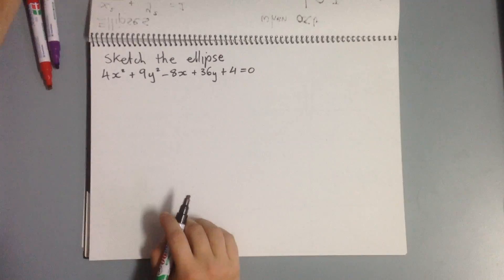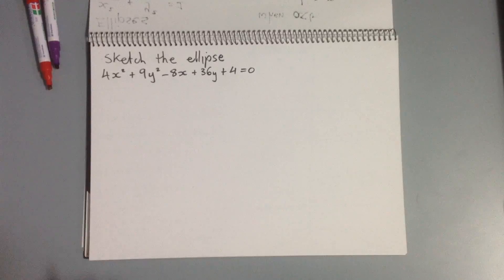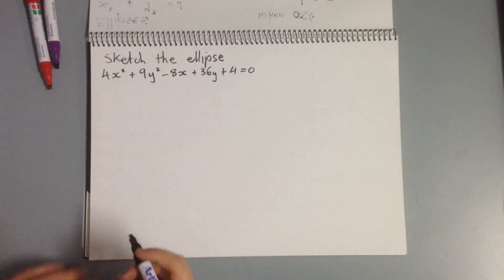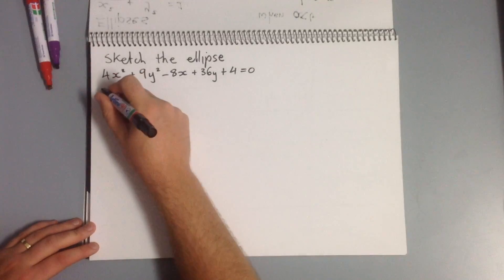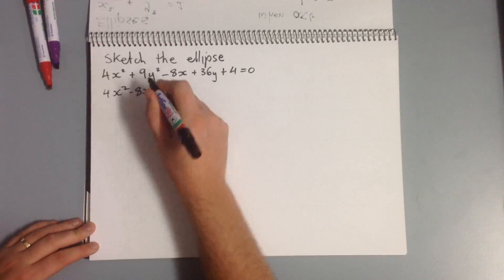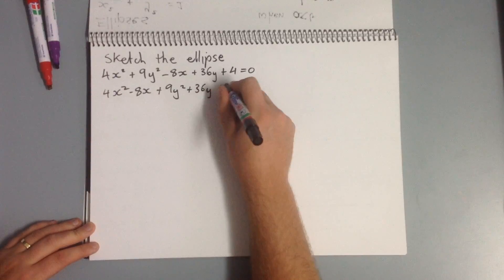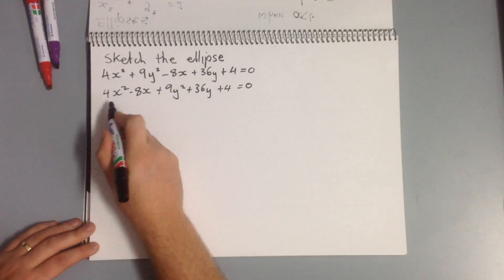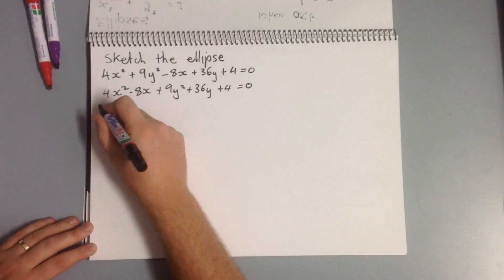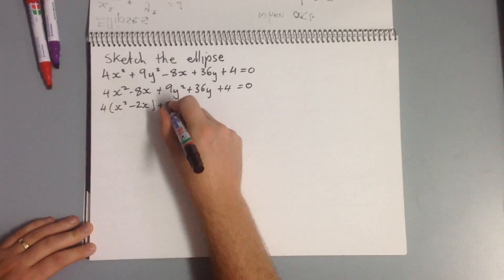So we'll have a look at sketching one of our ellipses. We've got: 4x squared plus 9y squared minus 8x plus 36y plus 4 equals 0, and we need to sketch that. We've got to use completing the square in order to identify the form of the ellipse. So we need to get our terms together: 4x squared minus 8x plus 9y squared plus 36y plus 4 equals 0. We want to take out 4 as a common factor from our x terms, and take 9 out as a common factor for our y terms.